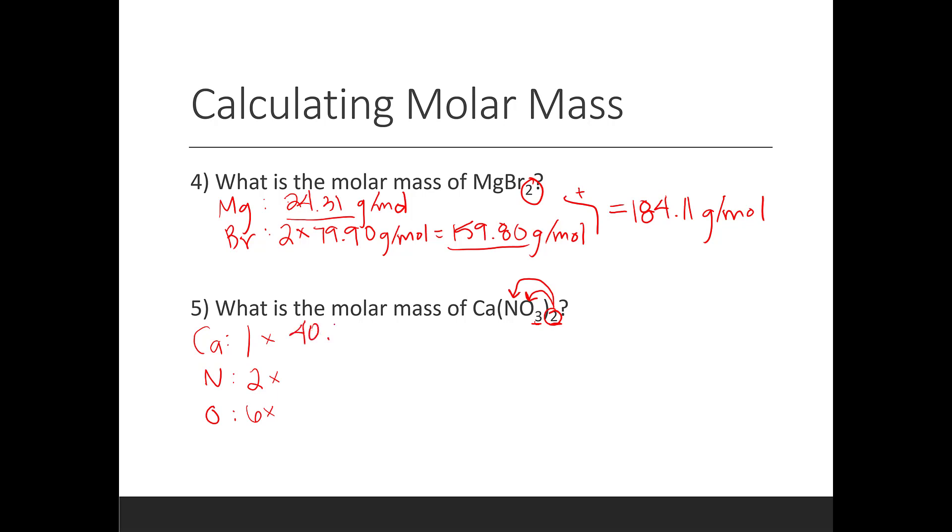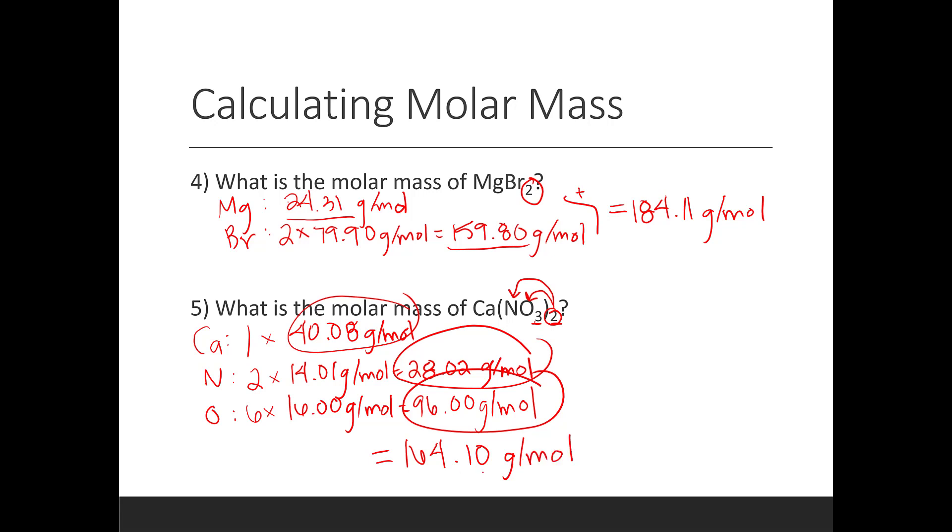So calcium is easy. It's just 40.08 grams per mole. Nitrogen two times 14.01 grams per mole is 28.02 grams per mole. All right, and then oxygen is six times 16.00 grams per mole. So we need to put that one in the calculator. Six times 16 is 96.00 grams per mole. And that just tells me the masses of those individual components. Remember, I still need to add up all three of these numbers to get my overall molar mass. So 96 plus 28.02 plus 40.08 gives me a total molar mass of 164.10 grams per mole. Remember that we need to go to that hundredths place. So that's why I included the zero there.